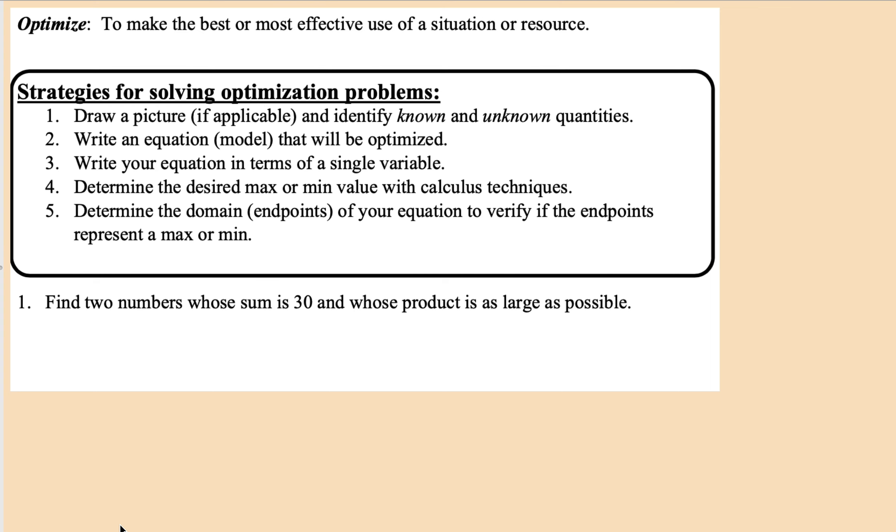So let's take a look at this first problem. We want to find two numbers whose sum is 30 and whose product is as large as possible. So let's talk about these two numbers whose sum is 30, and we want to find the maximum product.